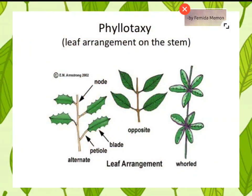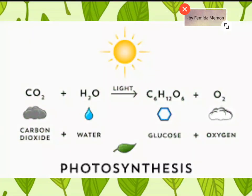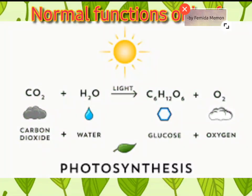Phyllotaxy may be of three different types: number one, alternate phyllotaxy; number two, opposite phyllotaxy; number three, whorled phyllotaxy, as shown in the figure.